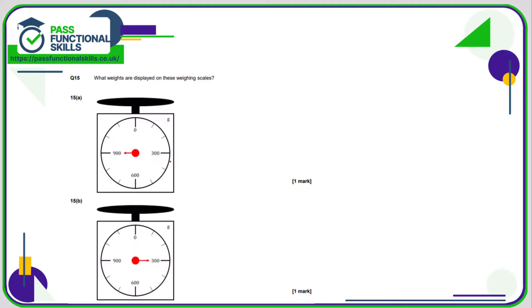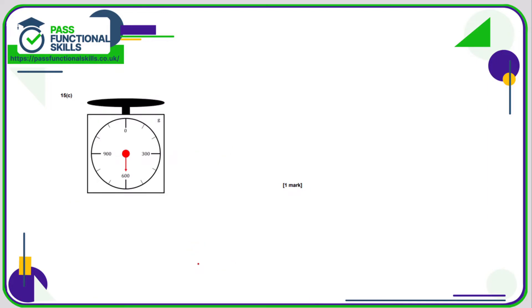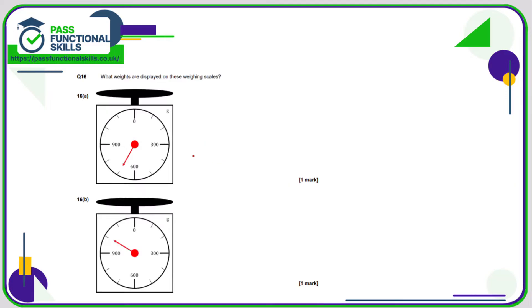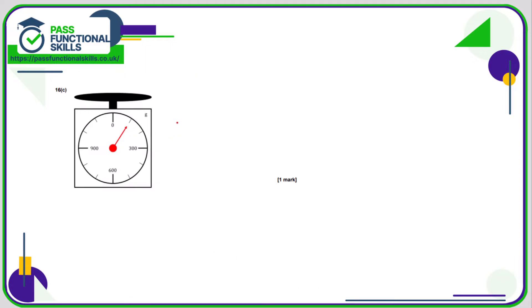Question number 15. The scale here is showing 900 grams. Here it's showing 300 grams. Here it's showing 600 grams. Here, we're going up in 100, so that is 700 grams. Again, each increment is 100, so that is 1000 grams, also known as a kilogram. And here, 100 grams.